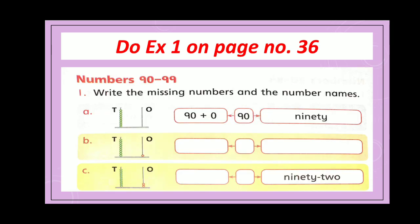Now open page number 36 and do exercise 1. Numbers from 90 to 99. Write the missing numbers and the number names. Complete all the parts of this exercise in book.